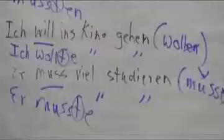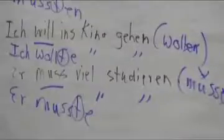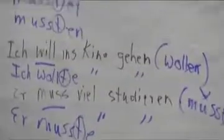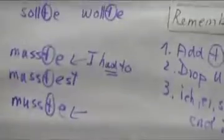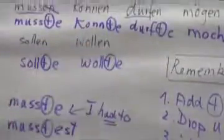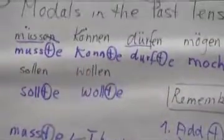And that's all there is to the modals in the past tense. It's not complicated, as long as you remember: drop the umlaut, add the t to the stem, and the personal endings.